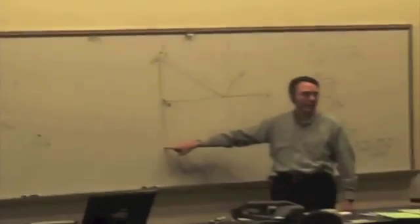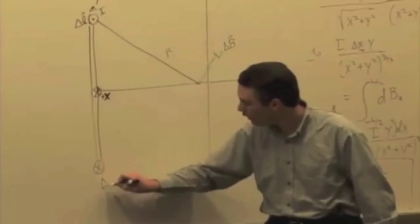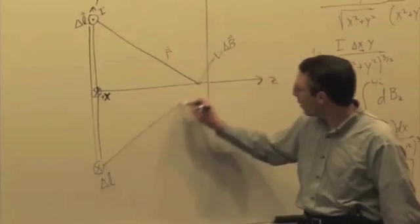what's the direction of the current at the bottom segment? Into the page, right? Into the board. Okay, so that's delta L. And there's my r vector.